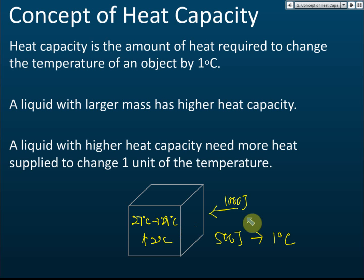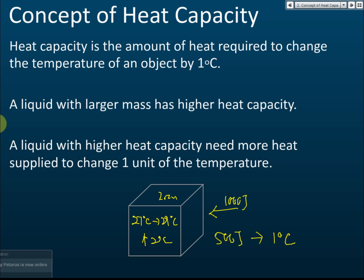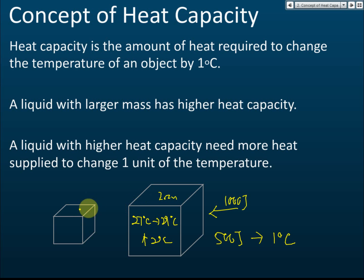Heat capacity depends on the mass of the object. Even though the material is the same — say, iron — a smaller iron block will have a lower heat capacity, maybe around 150 joules per degree Celsius, because it's smaller, so you need less heat to change the temperature by one degree Celsius.